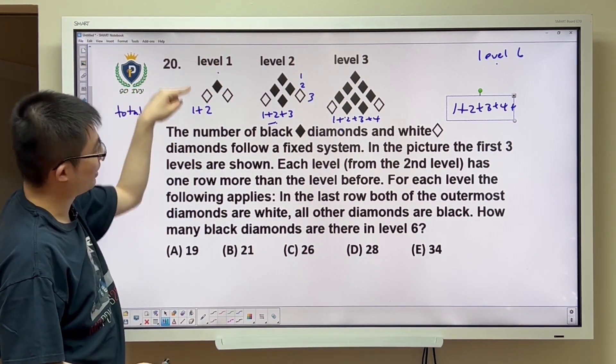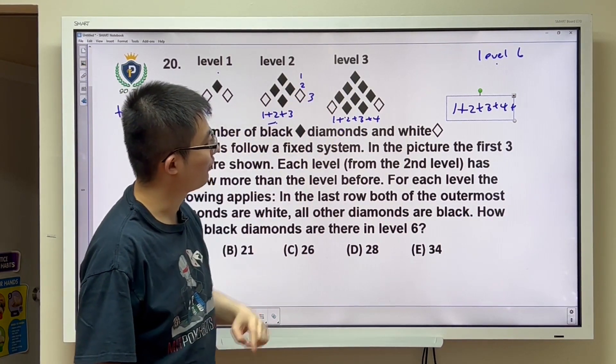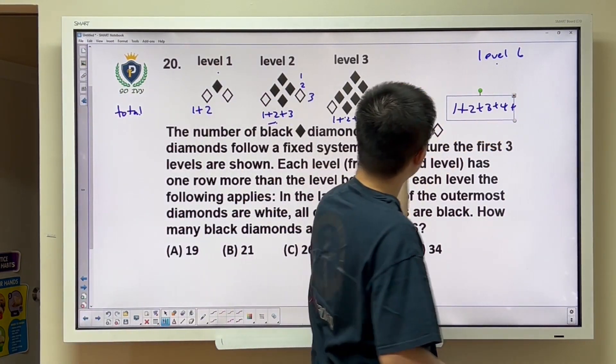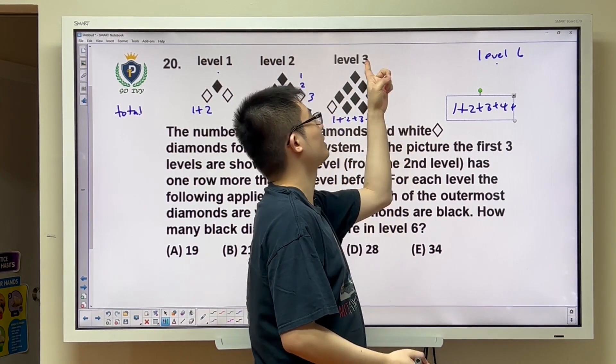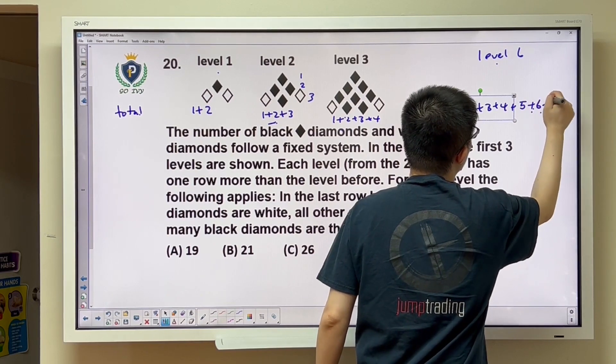At level 1, it ends with 2. At level 2, it ends with 3. Level 3 ends with 4. Therefore, we have the number right here. It's 1 more than the level number. So therefore, it's going to end with 7.